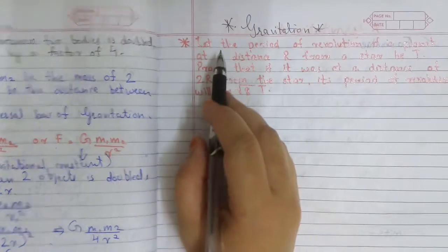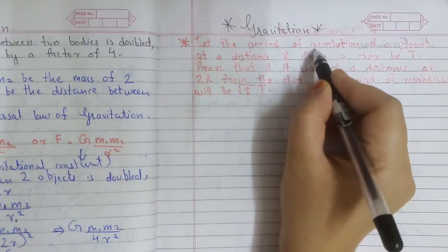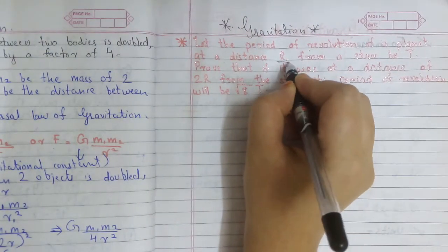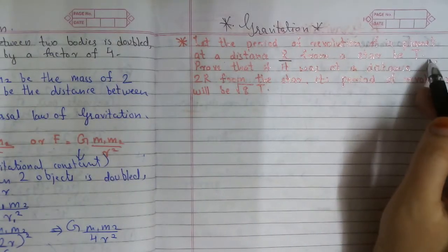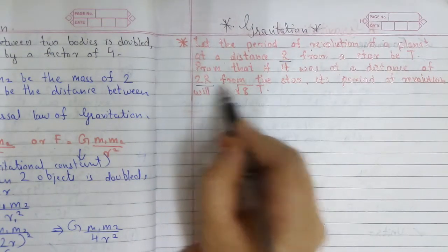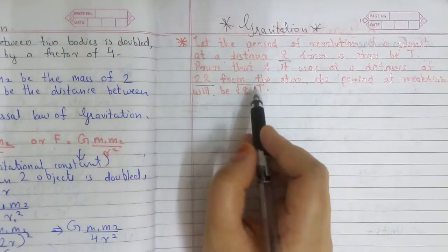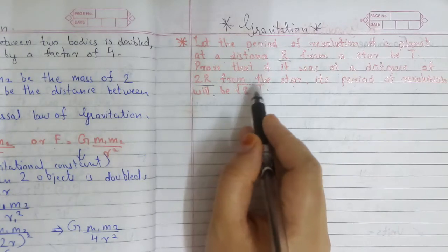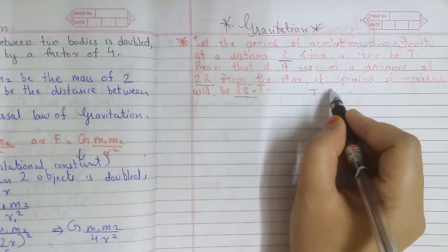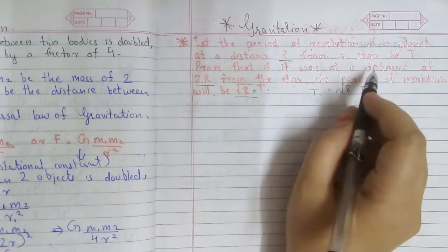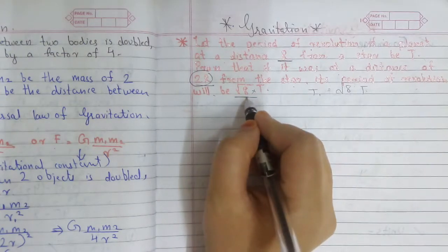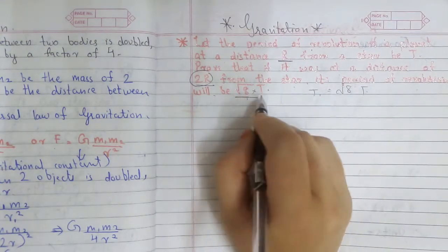The question is: given that the period of revolution of a planet at a distance R from a star is T, we have to prove that if it was at a distance of 2R from the star, its period of revolution will be equal to the square root of 8 multiplied by T.